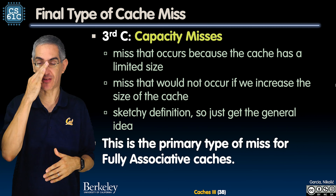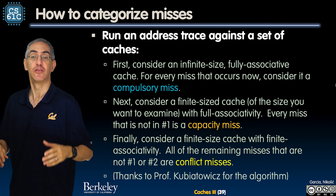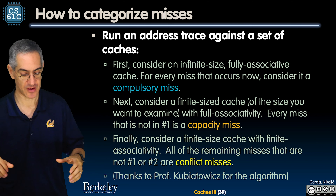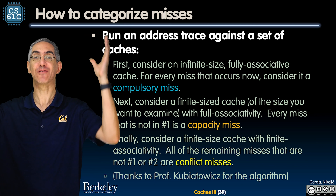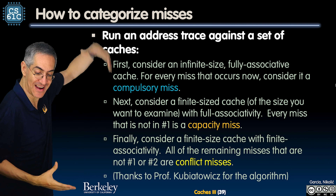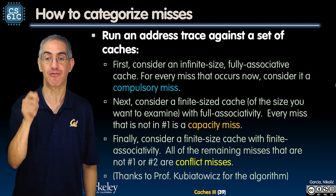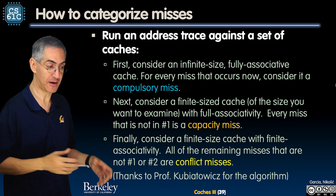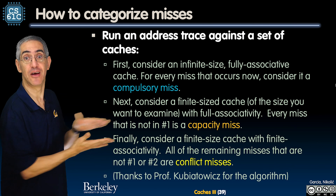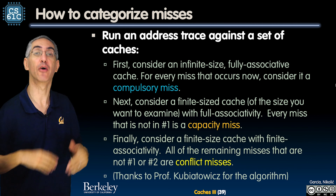A capacity miss is the miss you get because your cache can't be any bigger — there are some fixed costs you have. To categorize misses, here's the algorithm: consider the most insanely large cache you could ever have — infinite size, all fully associative. For every miss that occurs, it's going to be a compulsory miss, because it's never about capacity with infinite size, and never about conflict with fully associative.